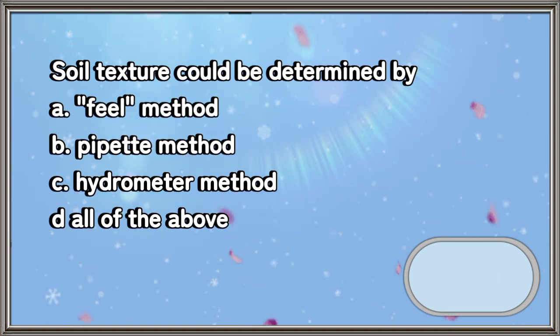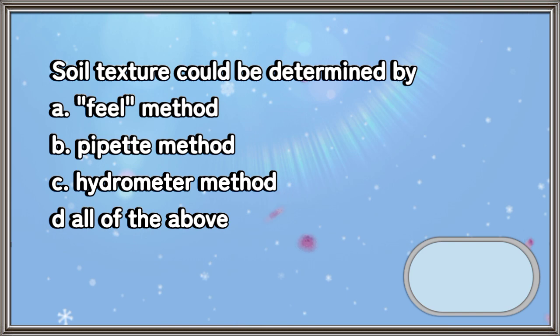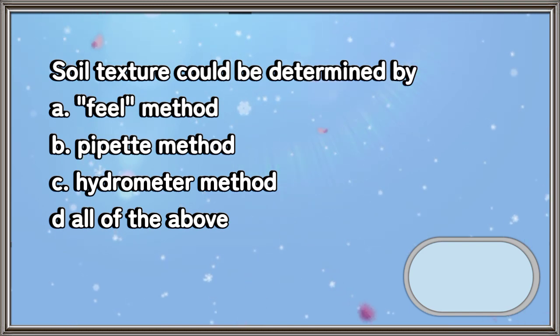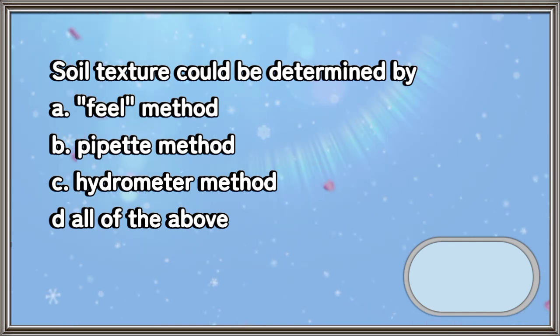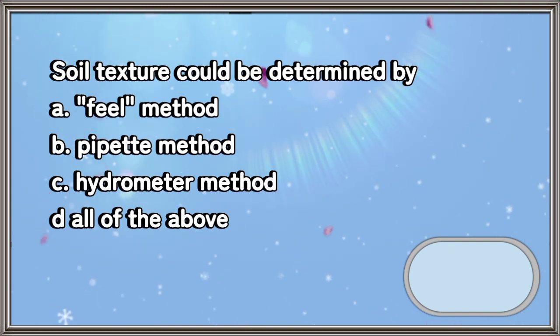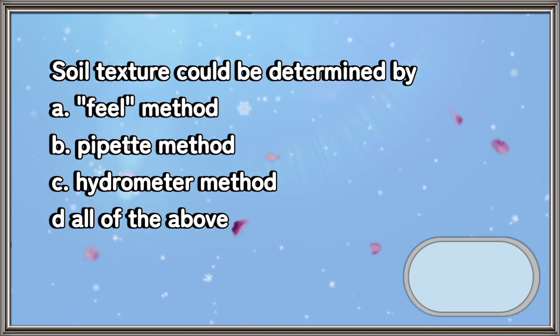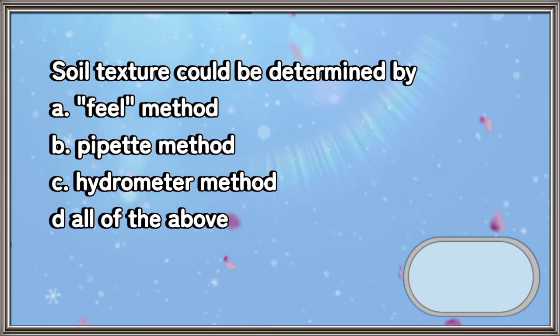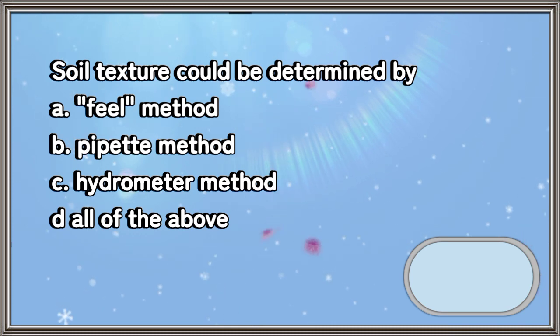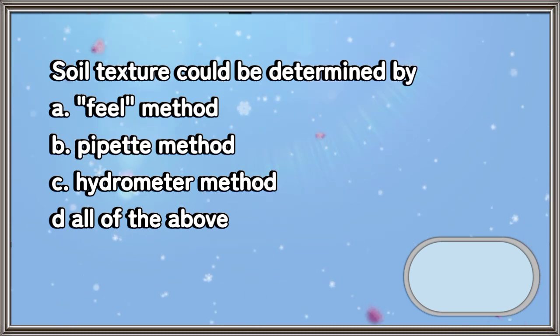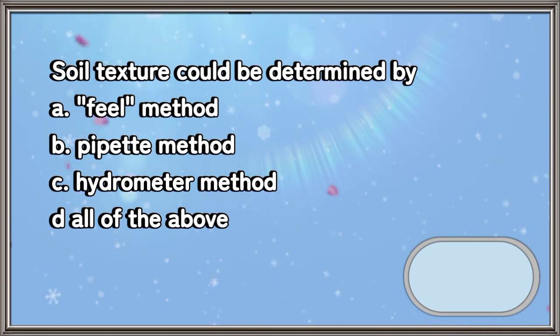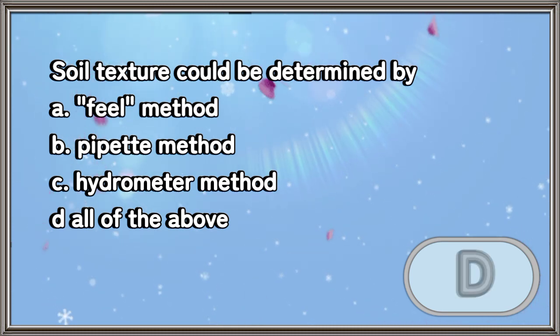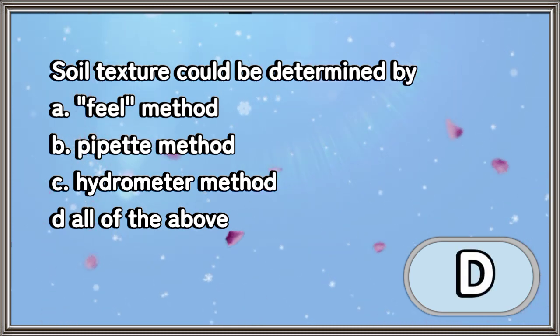Soil texture could be determined by: A. Feel method. B. Pipette method. C. Hydrometer method. D. All of the above. The answer is letter D.